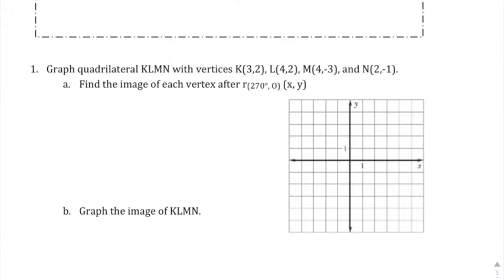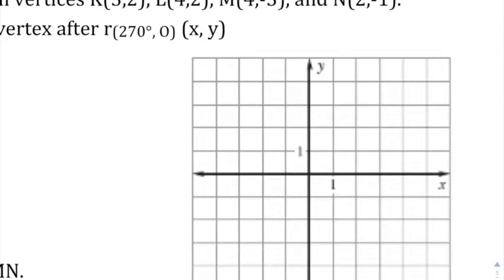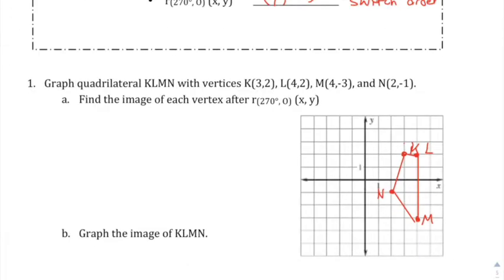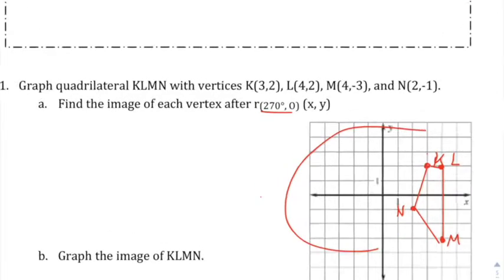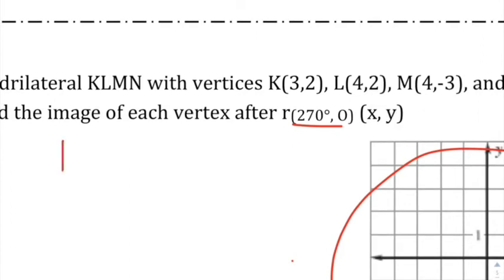Here's the first one we're going to rotate — quadrilateral KLMN. I'll go ahead and plot that so we can see what's going on. K is at (3, 2), L at (4, 2), M at (4, -3), and N at (2, -1). We're going to take that shape and rotate it 270 degrees — so we use our rules: switch the order and change the X sign for each point.